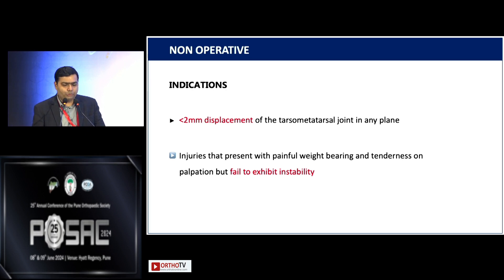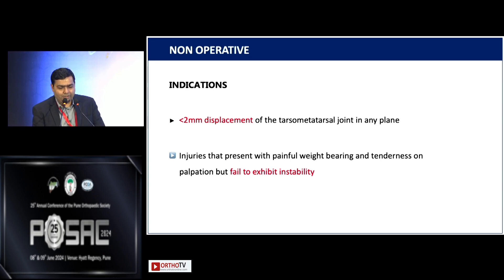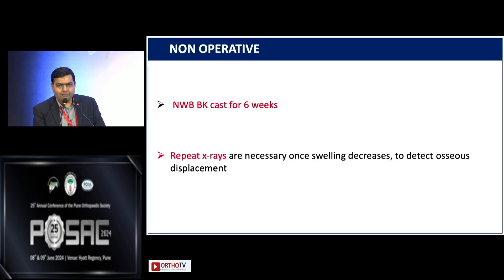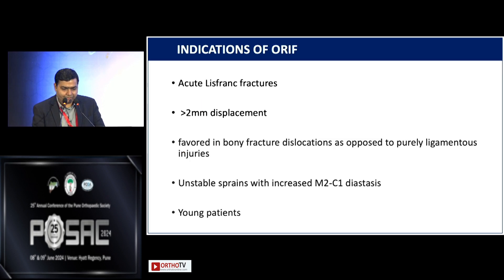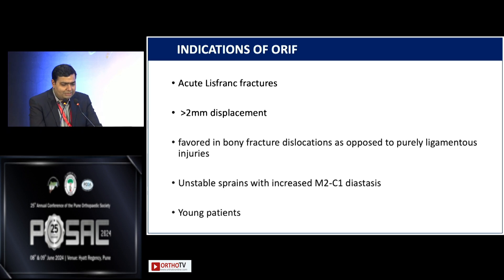Indications for non-operative management are less than 2 mm of displacement of the tarsometatarsal joint in any plane, and injuries presenting with painful weight-bearing and tenderness on palpation but failing to exhibit instability on radiographs. Manage with non-weight-bearing in a cast for 6 weeks, with repeat X-rays every 2 weeks once swelling and pain decrease, to detect any further displacement.